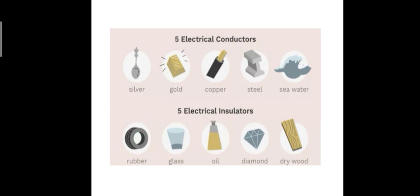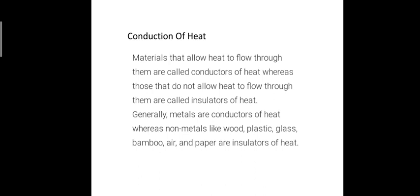Next is the conduction of heat. Several materials allow heat to flow through them — these are known as conductors of heat. Several materials cannot allow heat to flow through them — these are known as insulators of heat. Metals are good conductors of heat, while non-metals are bad conductors of heat.